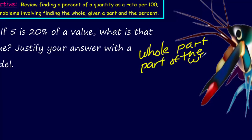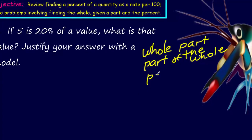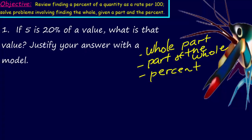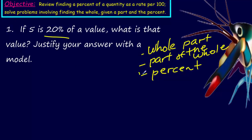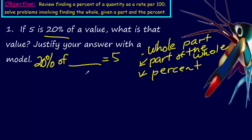Those are the three things we're looking at. By looking at this problem, you can see they gave us the 20%, so check — we have that part. Now this is where it could be confusing: if five is 20% of a value, the fact that it's 20% of a value and that equals five lets you know this is the whole part — we don't know what it is, it's just 'a value.' The part of the whole is the five, because it is saying that it is. Another way to think of it: the problem could be written as 20% of [unknown value] equals five.